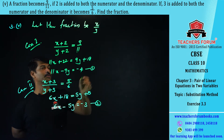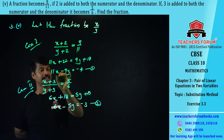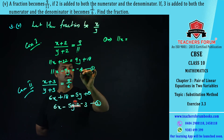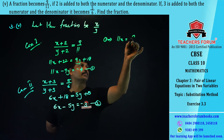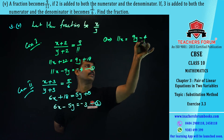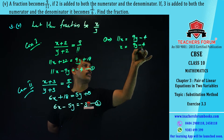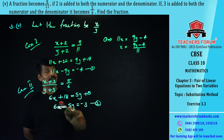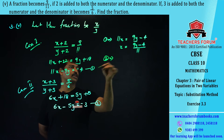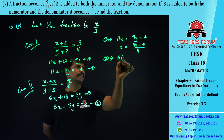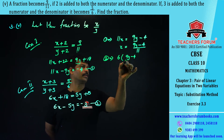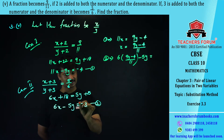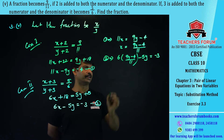From equation number one, 11x = 9y − 4, so x = (9y − 4)/11. Let this be equation number three. Substituting into equation number two: 6 × (9y − 4)/11 − 5y = −3.